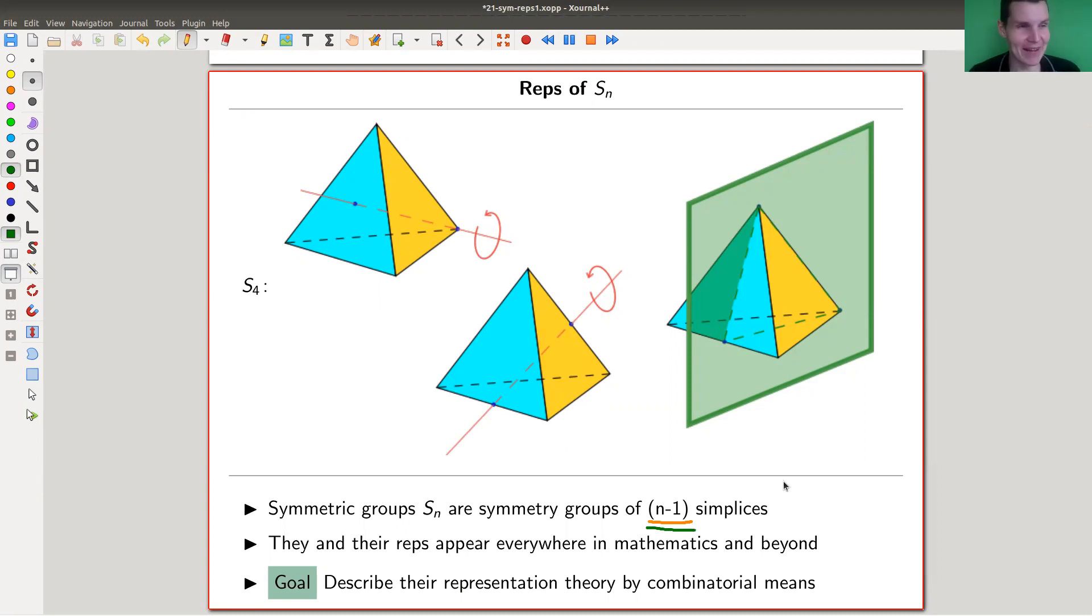So S_n is a symmetry group of the n minus one simplex. Let me double check whether I got that correct. So S_4 should be the symmetry group of the tetrahedron as illustrated here. And let me just call the tetrahedron the three simplex.